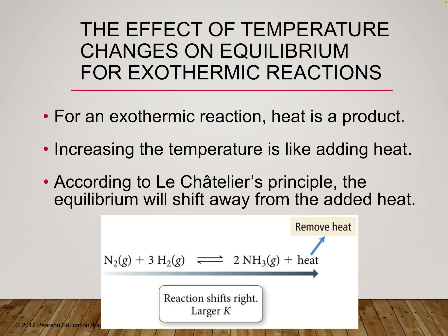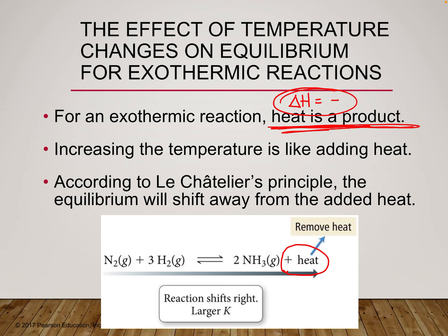If it's exothermic, it releases energy, so write plus heat on the product side. If it's endothermic, it absorbs energy, so write plus heat on the reactant side. I may give you a delta H value: if delta H is negative, the reaction is exothermic; if delta H is positive, it's endothermic. So if delta H is a negative value, write plus heat on the product side.